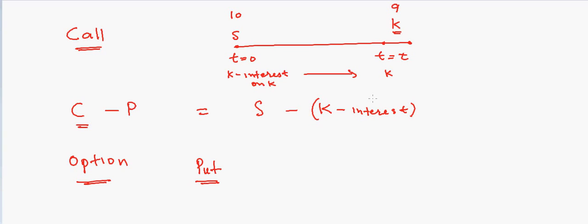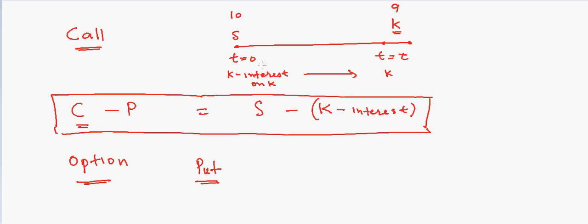Now if you want to put more details into it, then we can also see the dividends. So now S is the stock. If we would have bought the stock right now, then we would get all the dividends until time T. But now because we are not buying the stock, we are buying the option, we will lose all the dividends. So those dividends need to be subtracted from S. So we have to remove the dividends from here, so we have to say minus dividends.